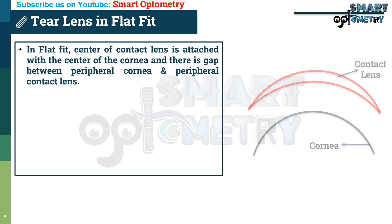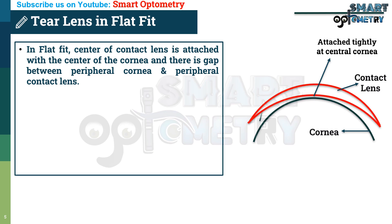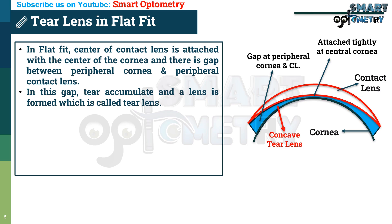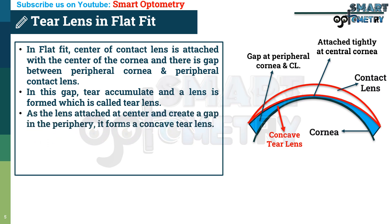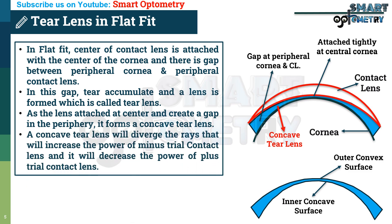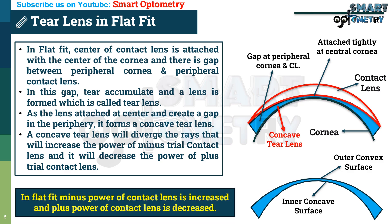In flat fit, the center of the contact lens is attached with the center of the cornea, and there is a gap between the peripheral anterior surface of the cornea and the peripheral posterior surface of the contact lens. Tear accumulates in this gap forming a concave tear lens — precisely, convexo-concave. A concave tear lens diverges rays, which increases the power of a minus trial contact lens and decreases the power of a plus trial contact lens.